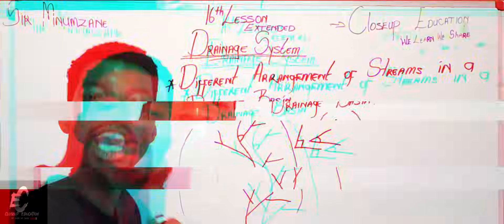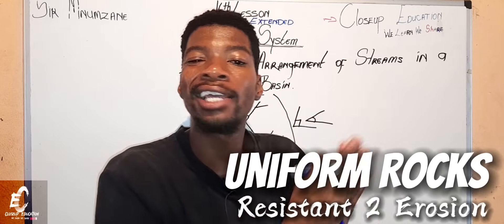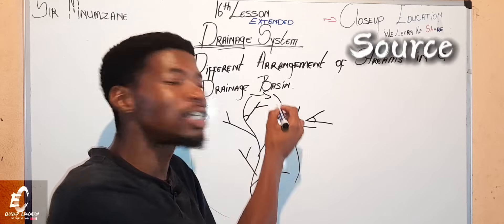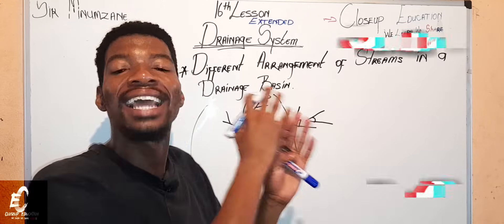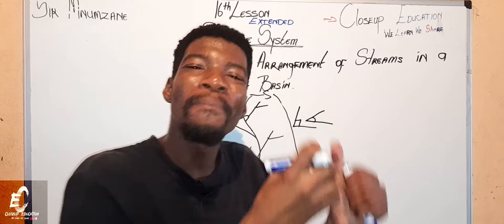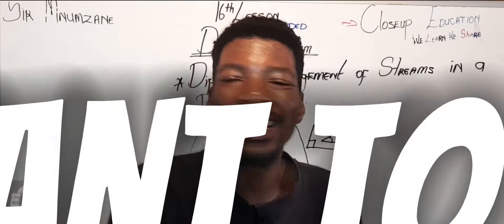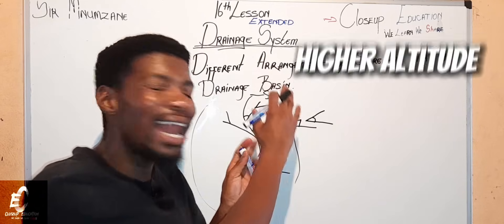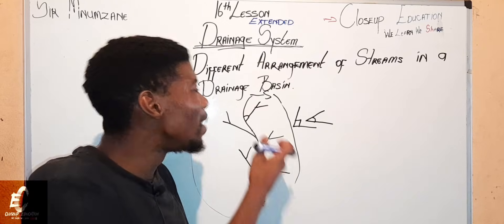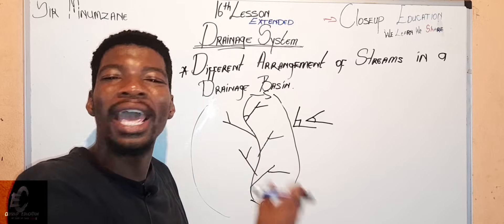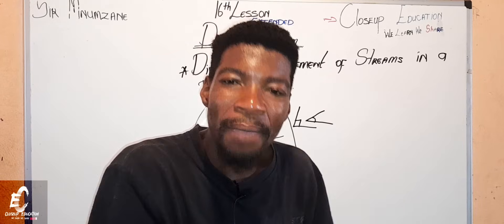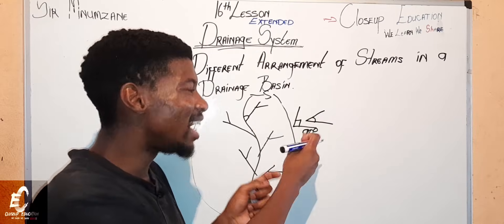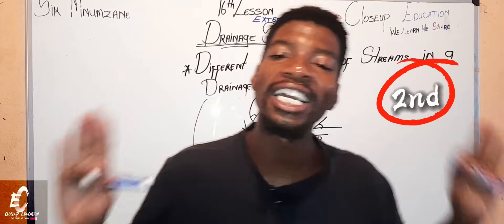In the dendritic pattern, you find uniform rocks that are equally resistant to erosion. The rocks are the same whether you are standing at the source or the mouth. They erode the same way — whether at the top high-lying area or the lower-lying area, erosion is the same. The streams join the main river at an acute angle, not a 90-degree angle.